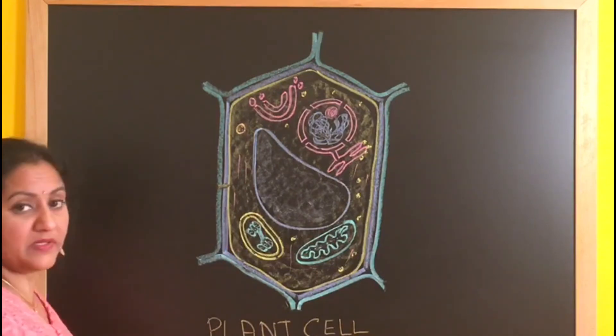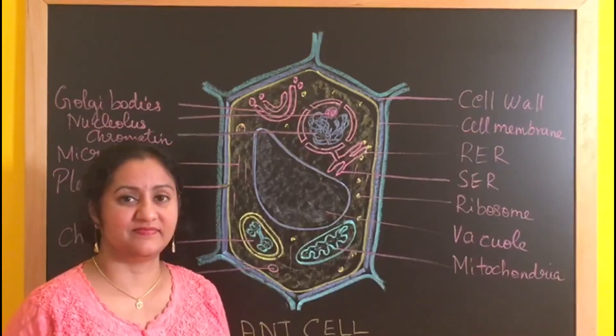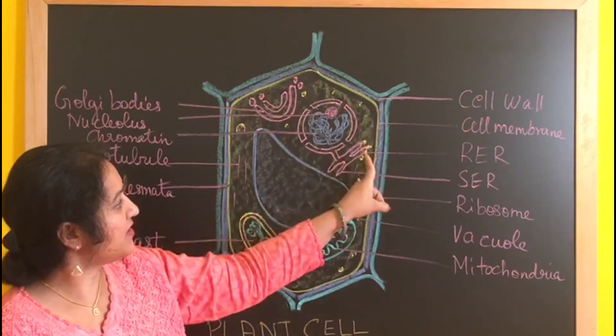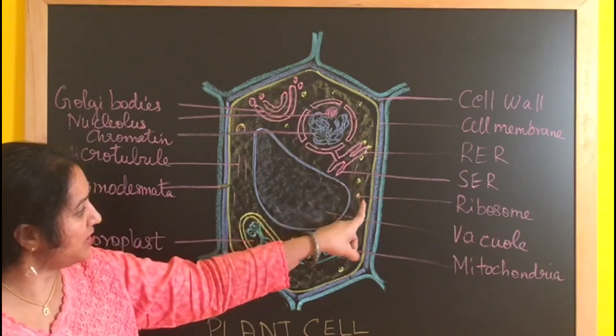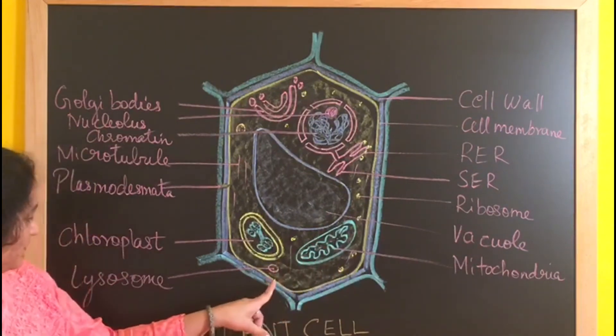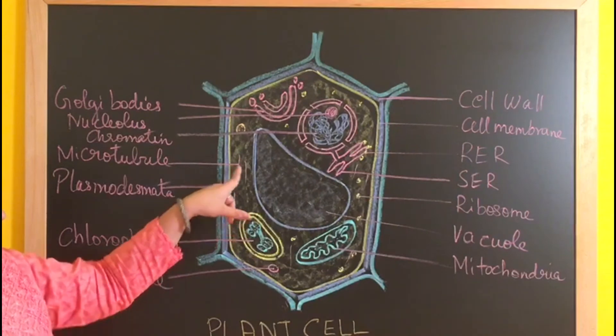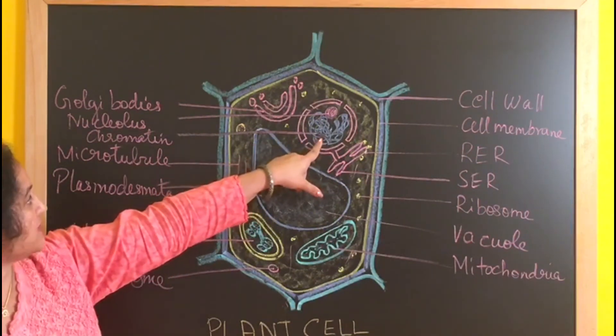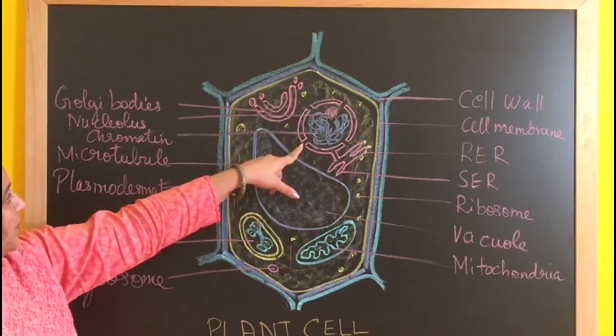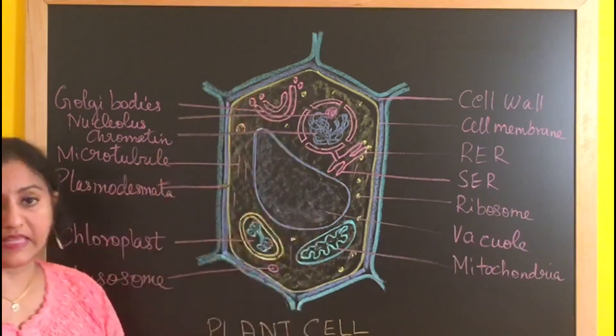Let's start to label. Cell wall, cell membrane, rough endoplasmic reticulum, smooth endoplasmic reticulum, ribosomes, vacuole, mitochondria, lysosome, chloroplast, plasmodesmata, microtubules, chromatin network, nucleolus, nuclear membrane, nuclear pores, Golgi bodies, and that's it about a plant cell.